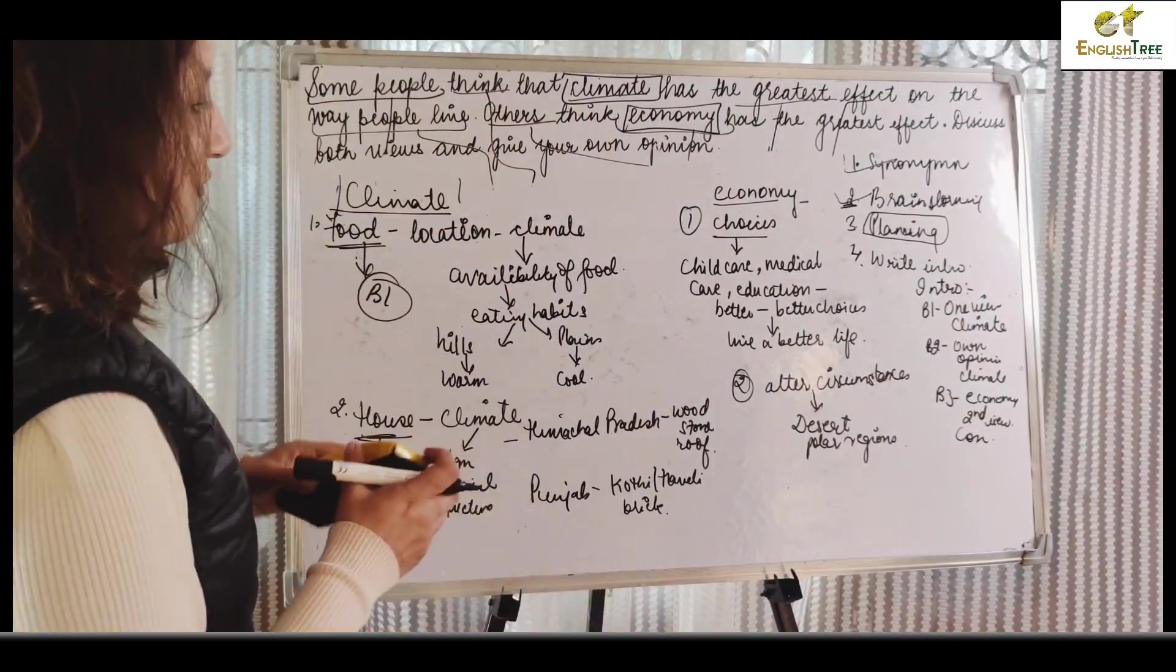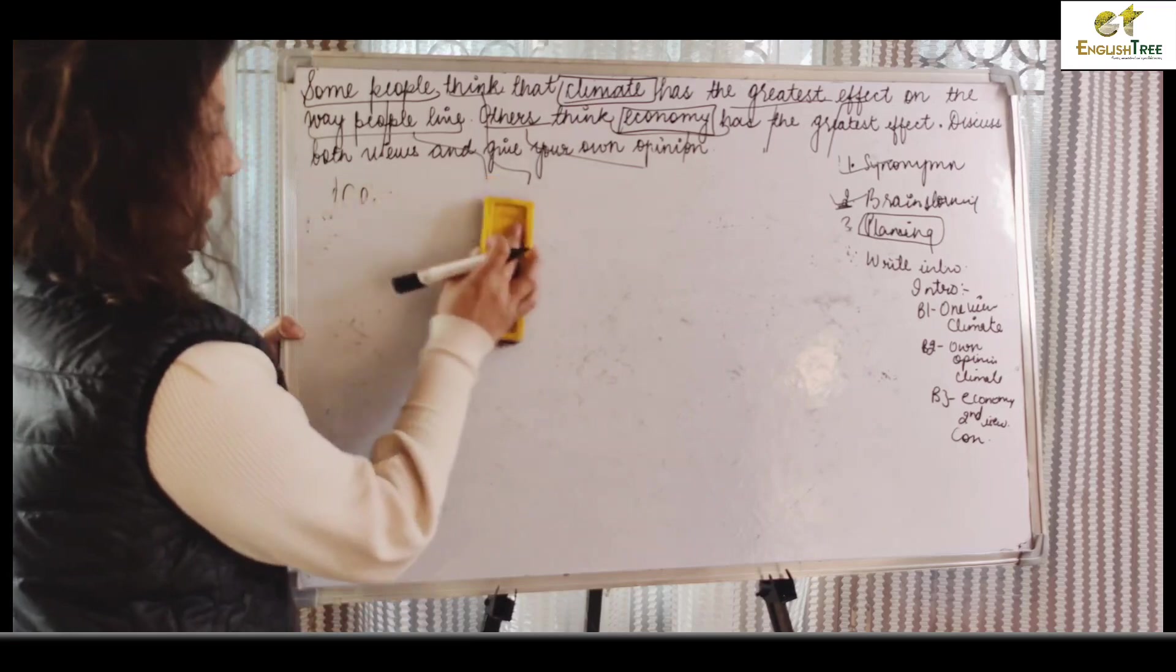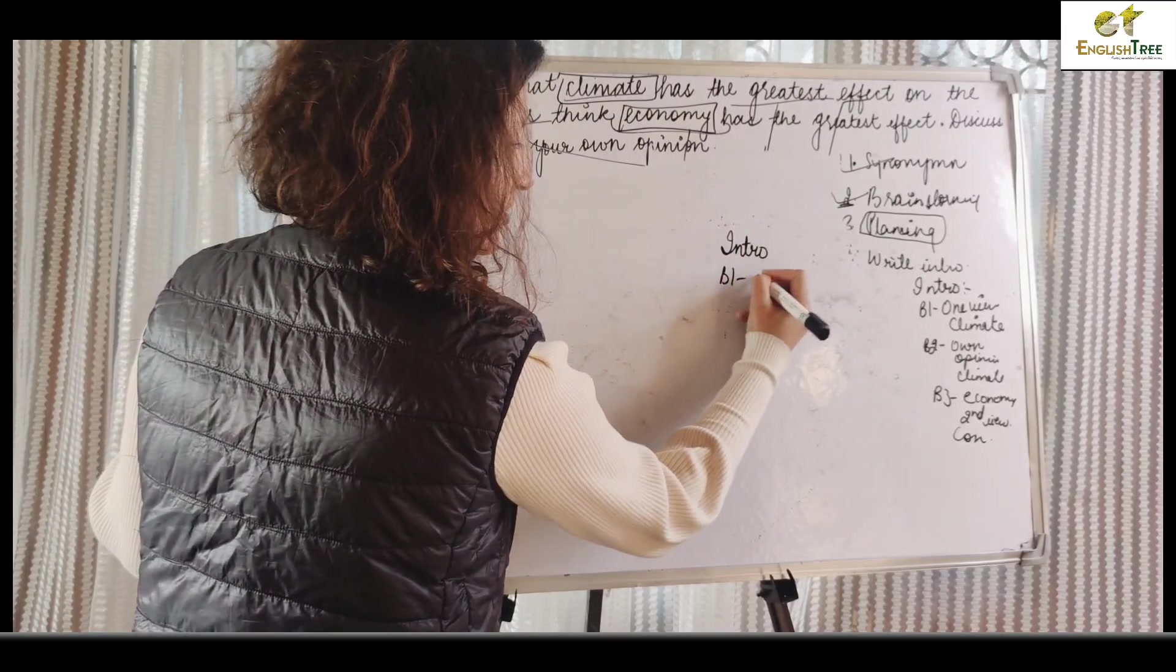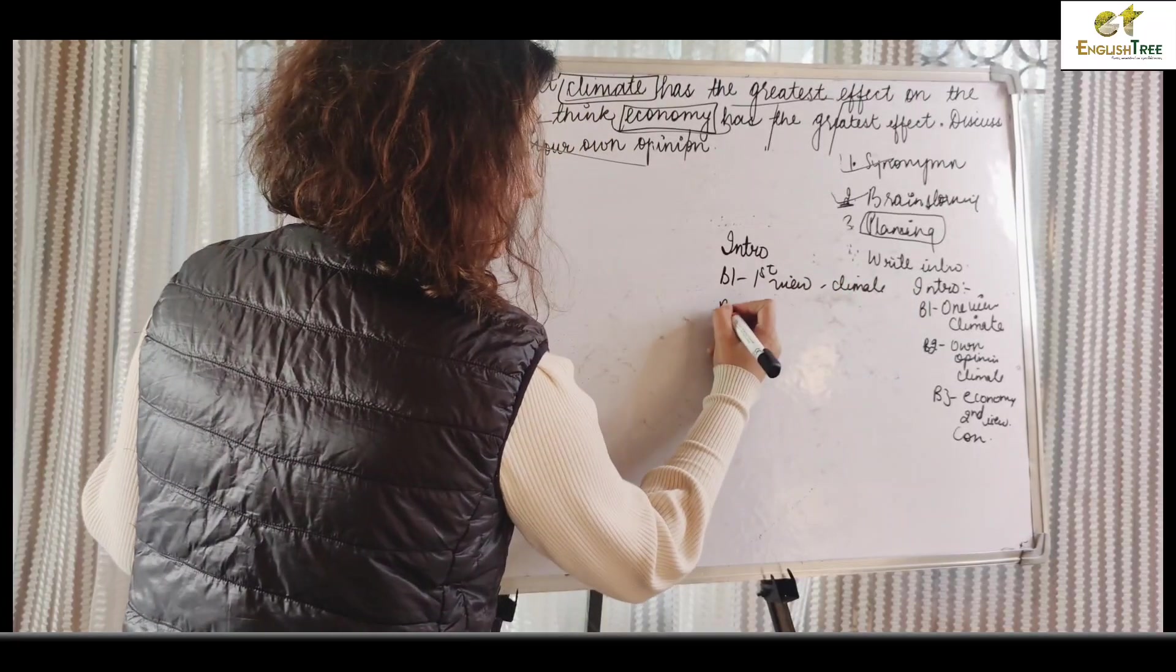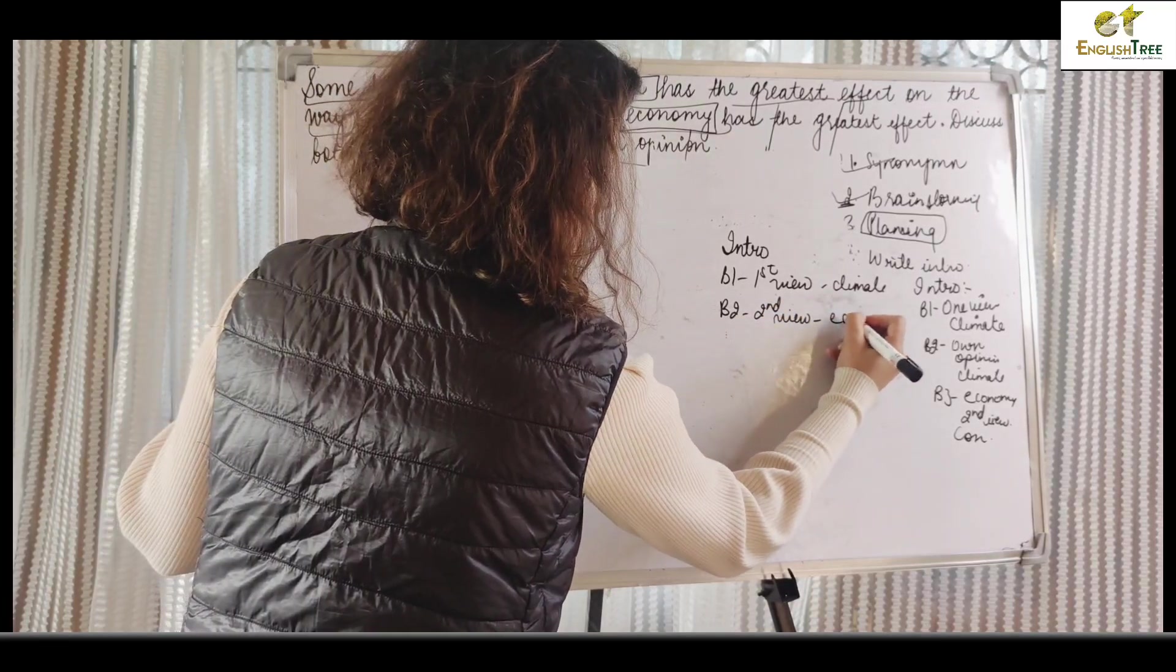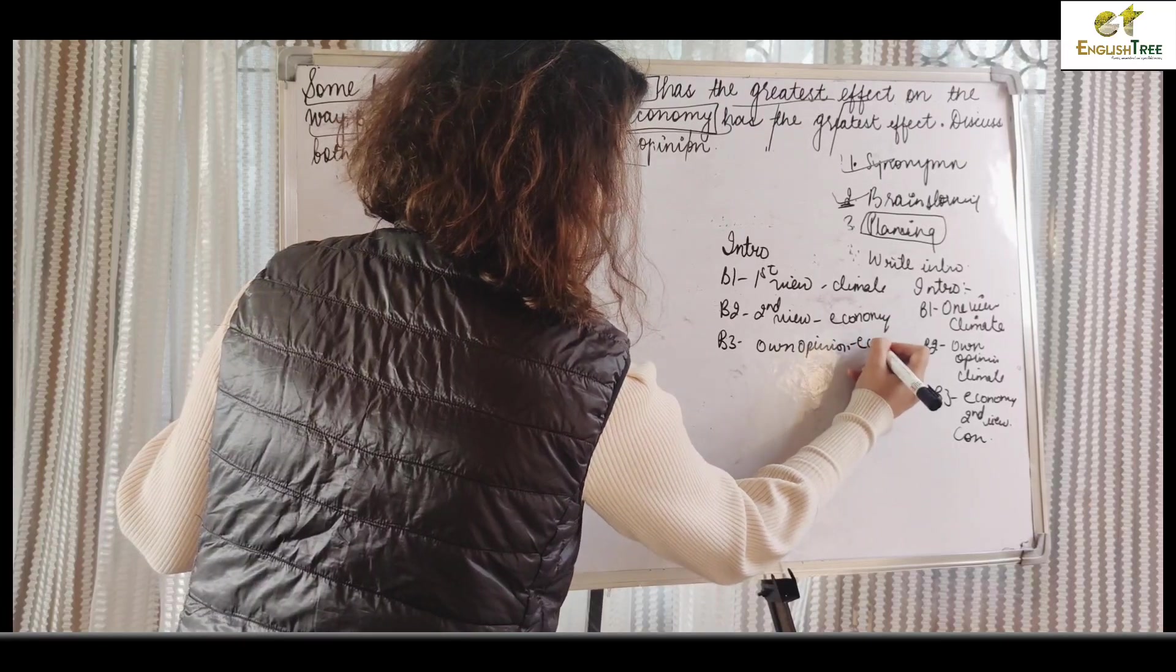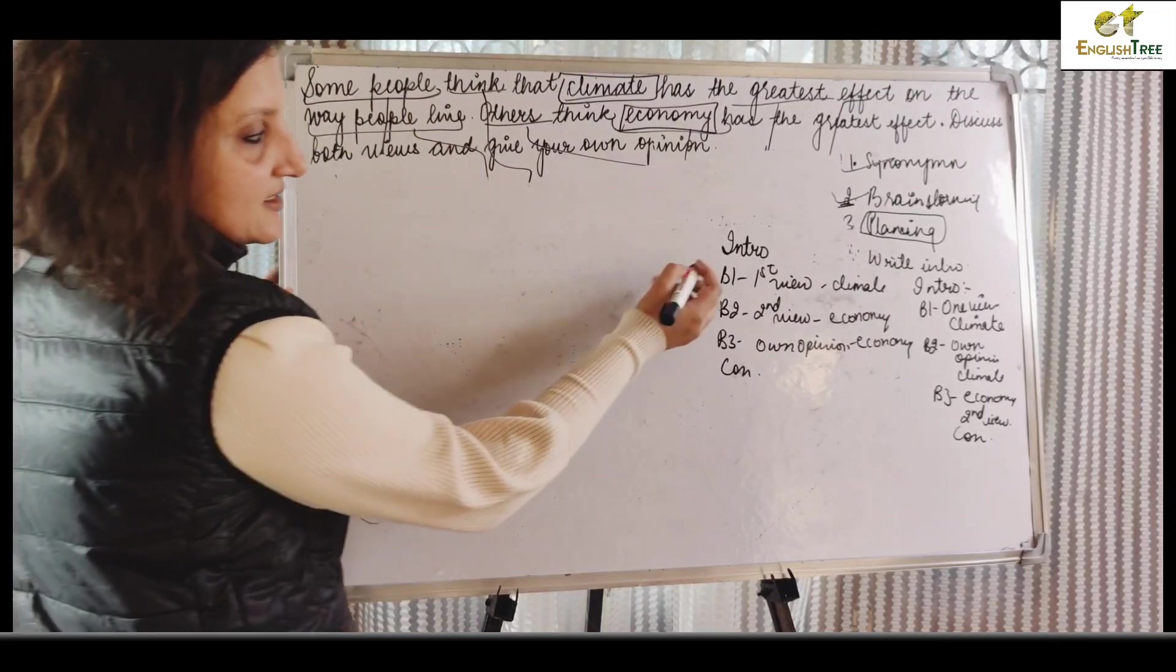Now in case, if you think that the economy affects people's lifestyle, then how do you make the structure? You will write introduction, BP1 first view which of course is the climate, BP2 second view which is the economy, BP3 own opinion which again will be the economy, and then conclusion. Now this condition is when - climate we have a food point, economy we have to talk about choices and the situation. That means if we have to elaborate two hundred fifty words.